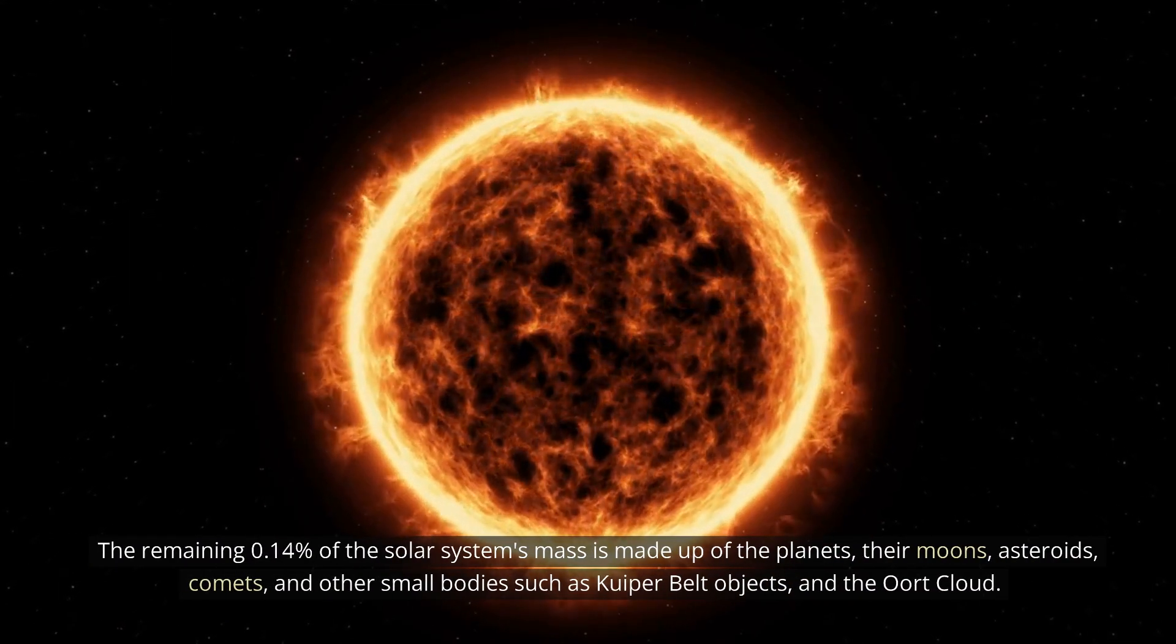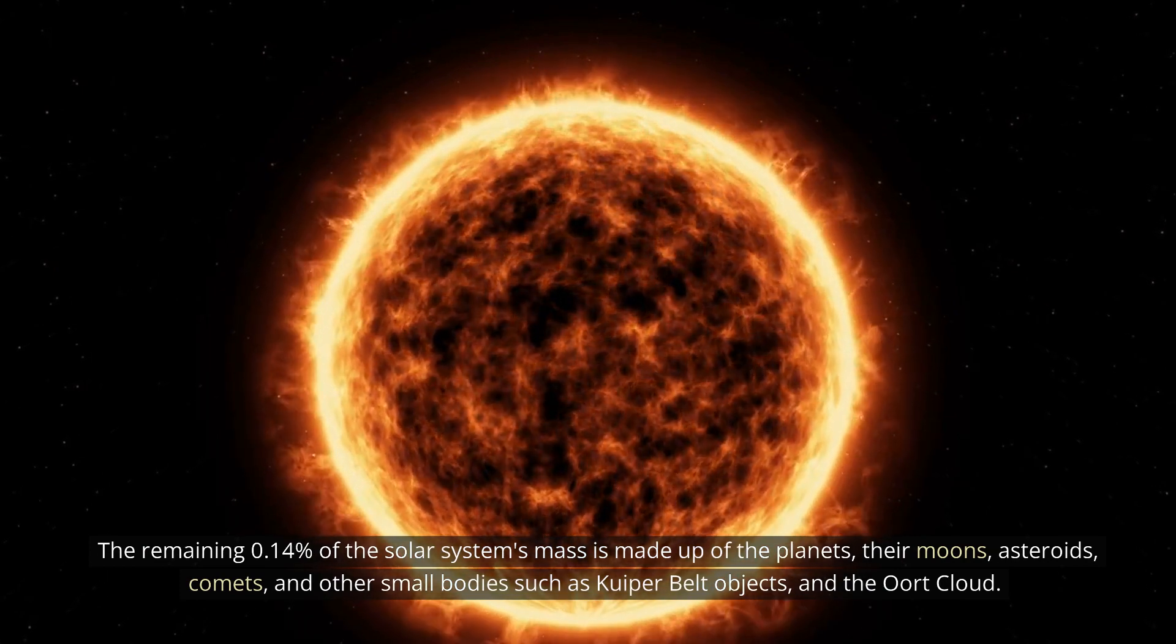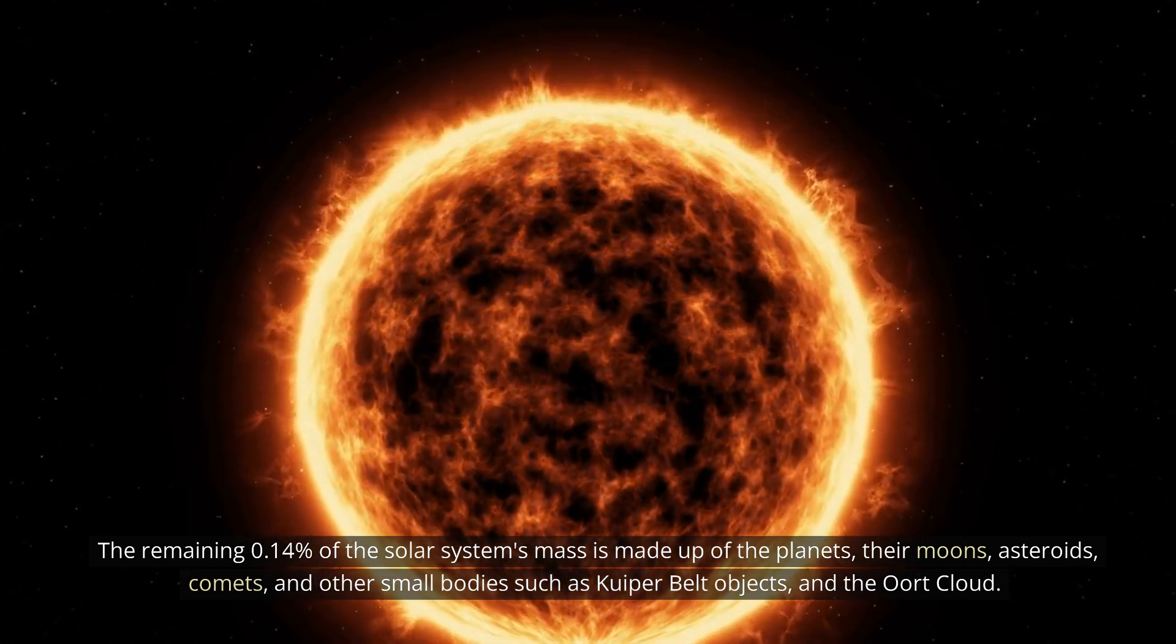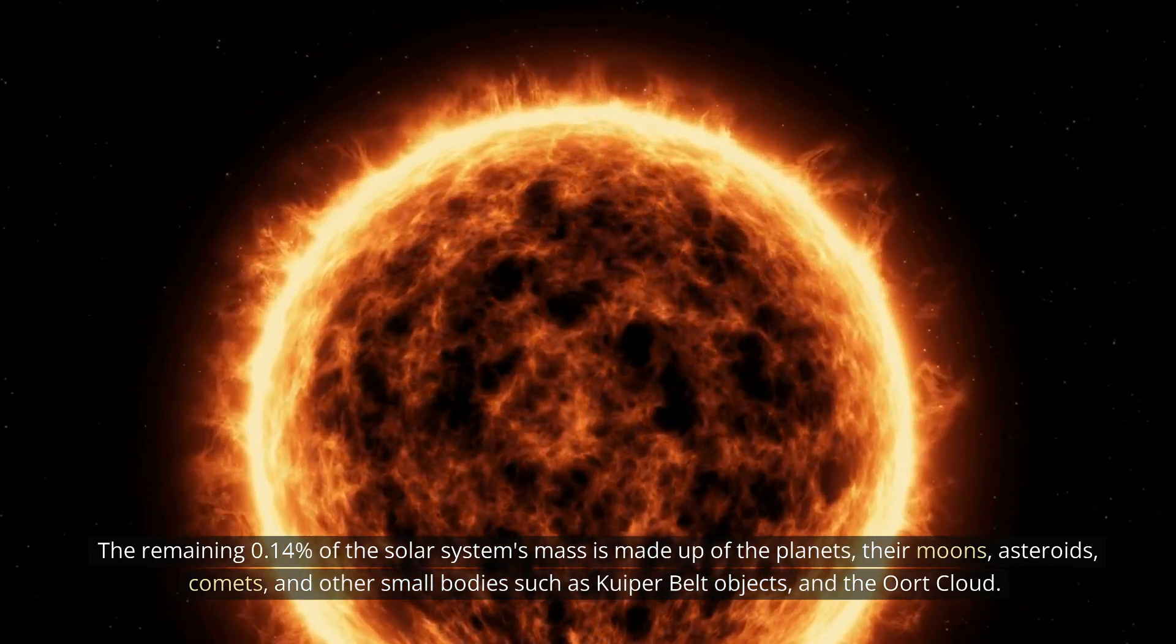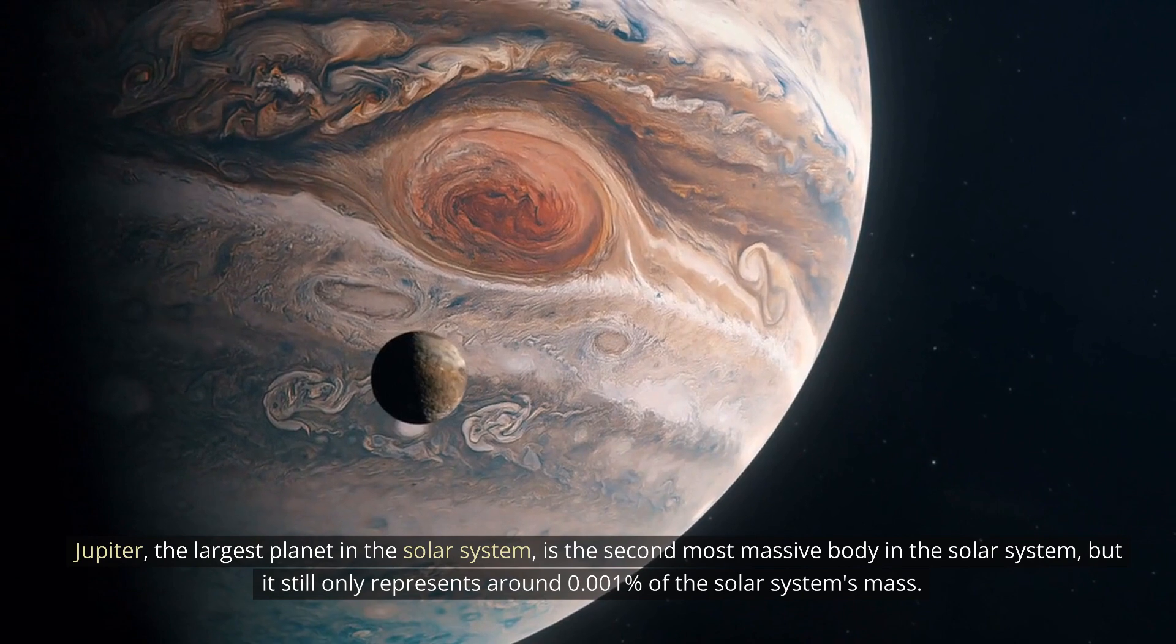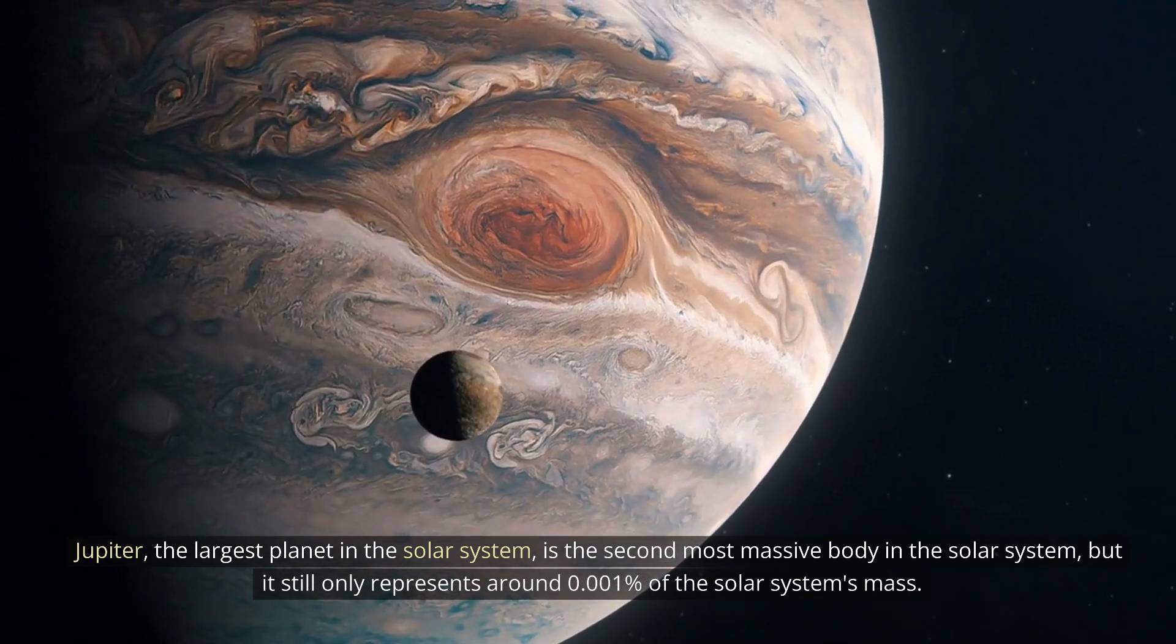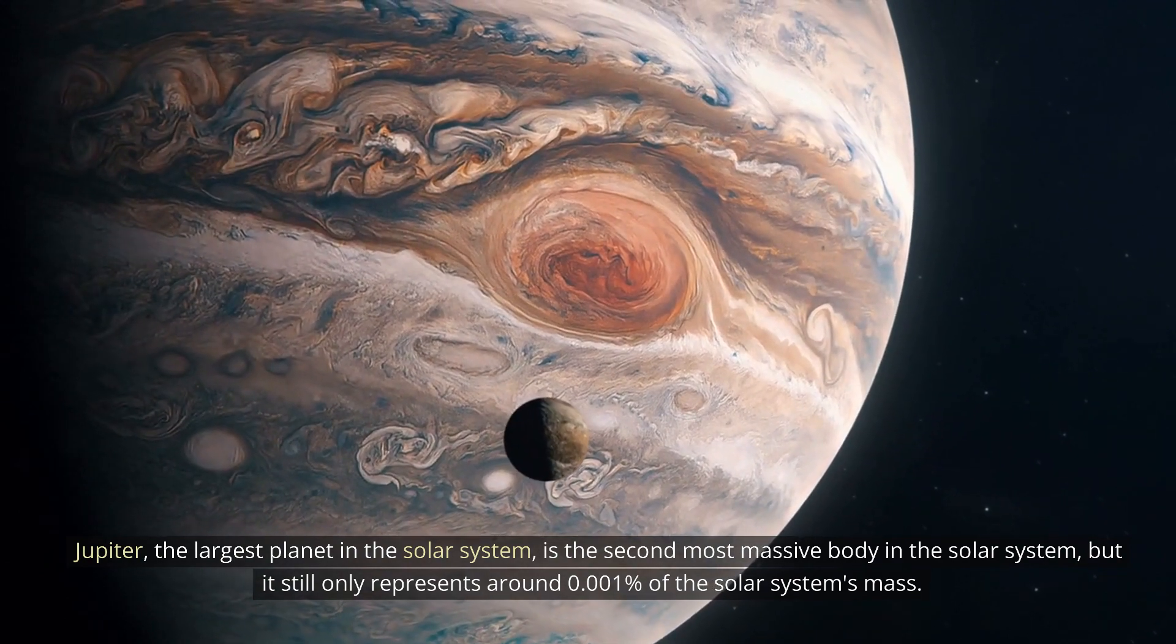The remaining 0.14% of the solar system's mass is made up of the planets, their moons, asteroids, comets, and other small bodies such as Kuiper belt objects and the Oort cloud. Jupiter, the largest planet in the solar system, is the second most massive body in the solar system, but it still only represents around 0.001% of the solar system's mass.